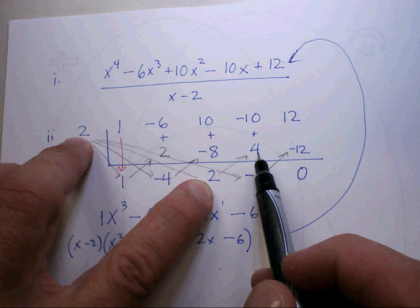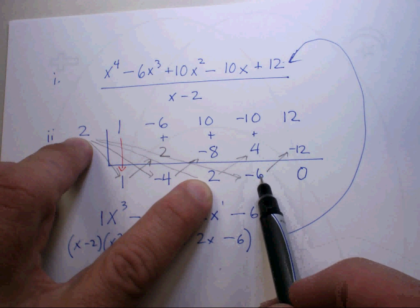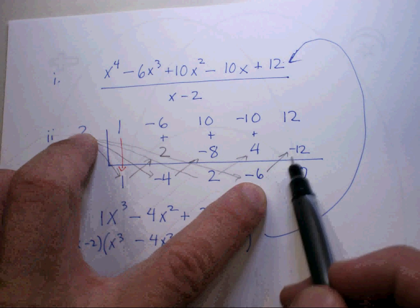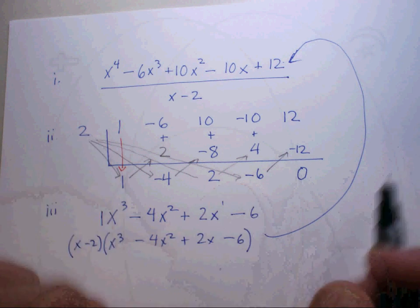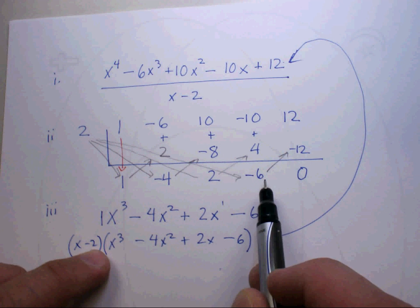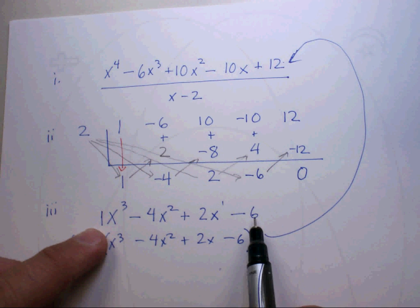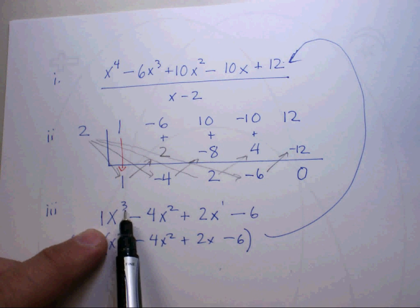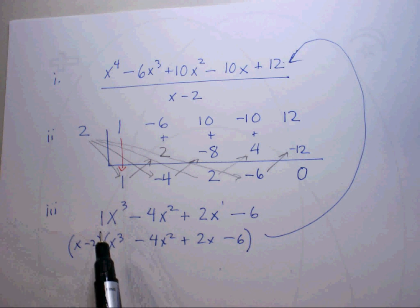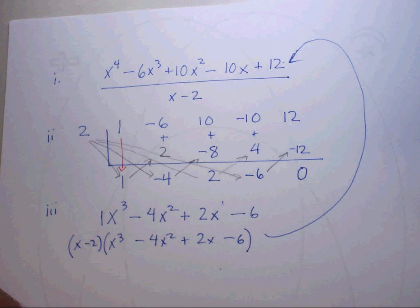Multiply, put that result here, the product there. Add, you get negative 4. Multiply, that goes here. Add, you get positive 2. Multiply, you get 4. Add, you get negative 6. Multiply, you get negative 12. Add, you get zero.